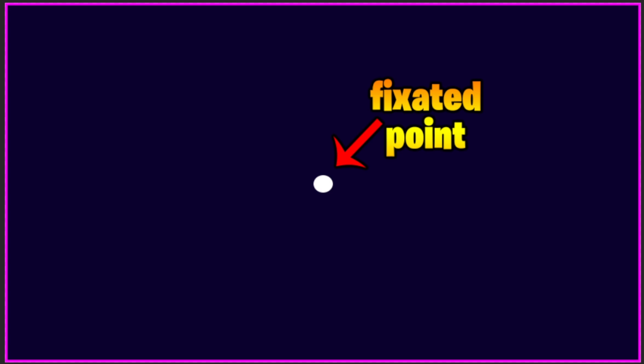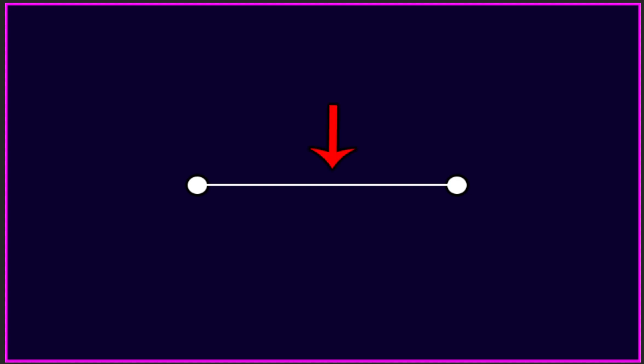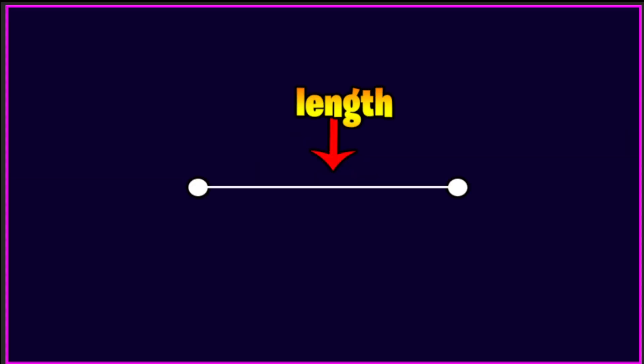Now let's talk about the first dimension. The first dimension only has one plane, that being length. I like to use the example of the fixated dot for zero dimensions and a line for one dimension because it refers to length, meaning we now have two fixated dots and a line drawn between them.